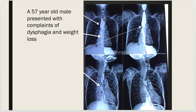You can see the contrast opacifying the entire length of the esophagus and entering into the stomach. The first abnormality is a holdup of contrast in the upper one third of the esophagus, with a mild air-fluid level and narrowing at the cervical level.